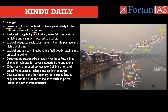Second challenge: reduced navigability. In the Himalayan river system, there is huge siltation because the Himalayas are young fold mountains, with waterfalls and cataracts. In coastal stretches, salinity corrodes the bottom of vessels. India also lacks adequate navigation systems, resulting in unsafe passages and high travel time.